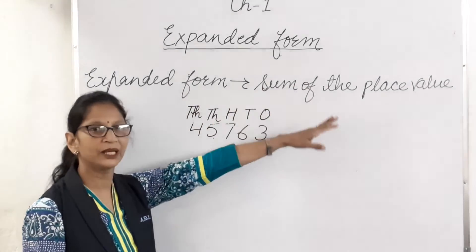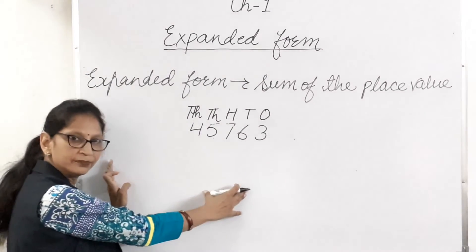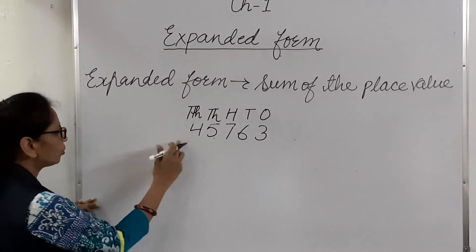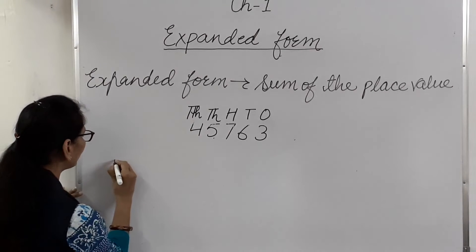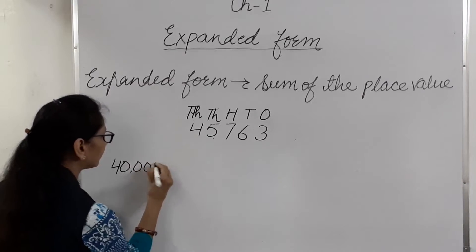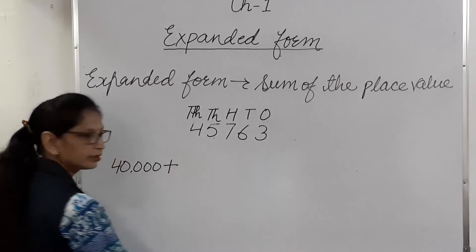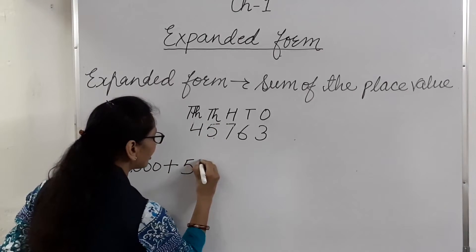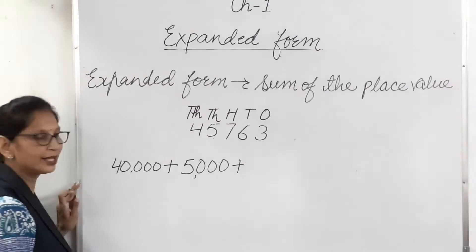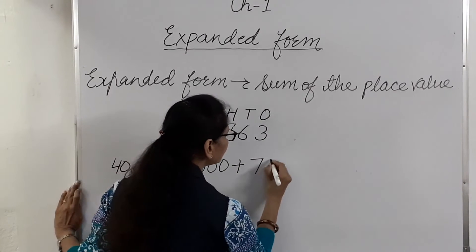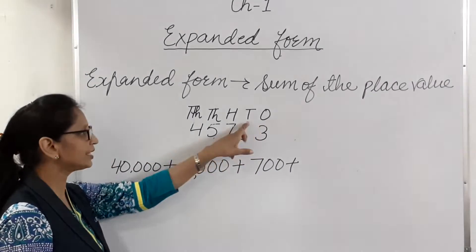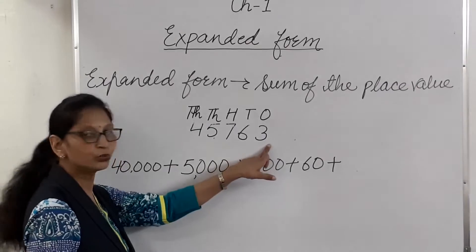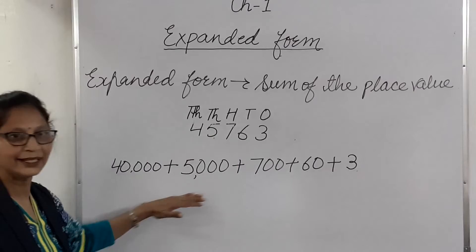Expanded form means the sum of the place values — that means writing the place value of each digit and adding them. So we start from 4, which is in the ten thousands place: 4 multiplied by 10,000 equals 40,000. Plus 5 in the thousands place: 5 multiplied by 1000 equals 5000. Plus 7 in the hundreds place: 7 multiplied by 100 equals 700. Plus 6 in the tens place: 6 multiplied by 10 equals 60. Plus 3 multiplied by 1 equals 3. So the expanded form is 40,000 + 5,000 + 700 + 60 + 3.